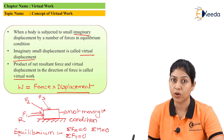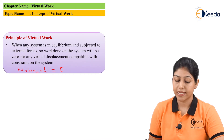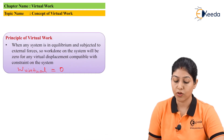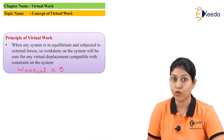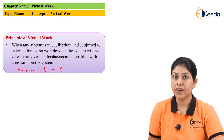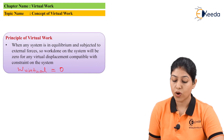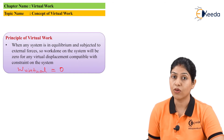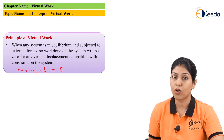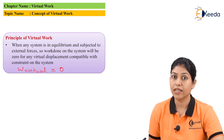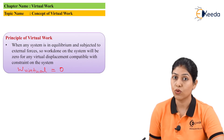The summation of the work done by every force is considered as the virtual work done by the system, and that will be equivalent to zero. So as per this principle: when any system is in equilibrium and subjected to a number of external forces, the work done on the system will be zero for any virtual displacement. We can define this principle with the help of a diagram.